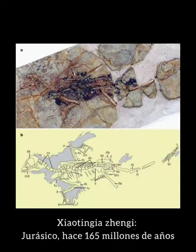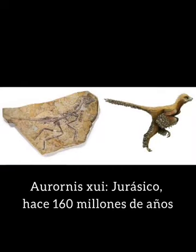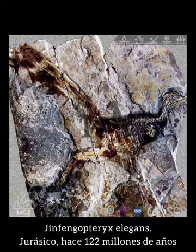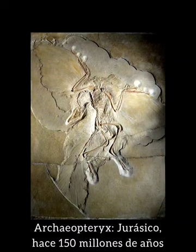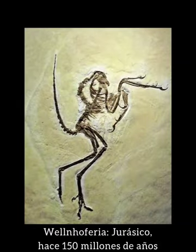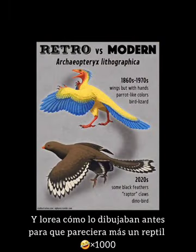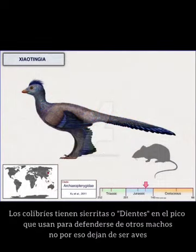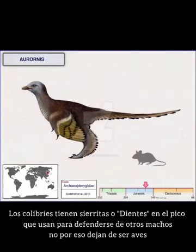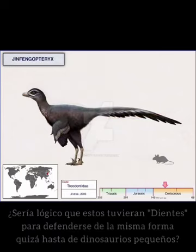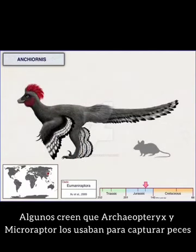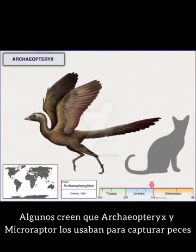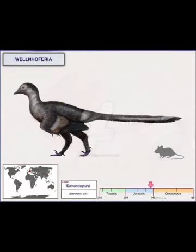Sin embargo, el asunto no termina allí. Siotinia, Aurornis, Jinfengopterix, Anchiornis —muy cercanamente emparentado con Archaeopteryx—, Wellnhoferia, todos del periodo Jurásico y datados millones de años antes que Yutaraptor, que es si no el primer raptor de gran tamaño con plano corporal más similar a los terópodos primitivos. Si miráramos hoy a estas especies basales, a simple vista parecerían prácticamente aves. No seríamos capaces de hacer una clara diferencia entre ellos y las aves actuales, más allá de la cola vertebrada, los deditos en las alas y algunos dientes en el pico.